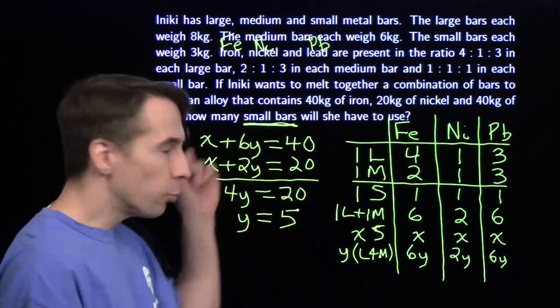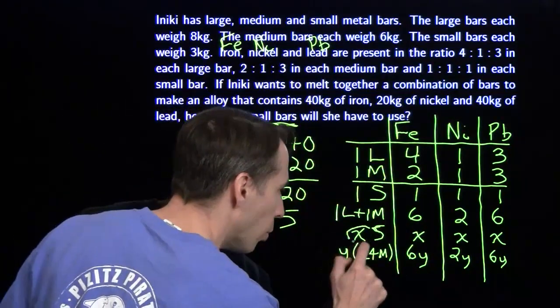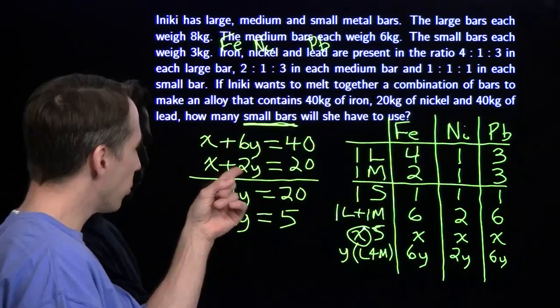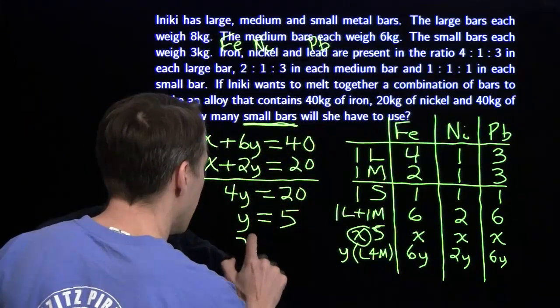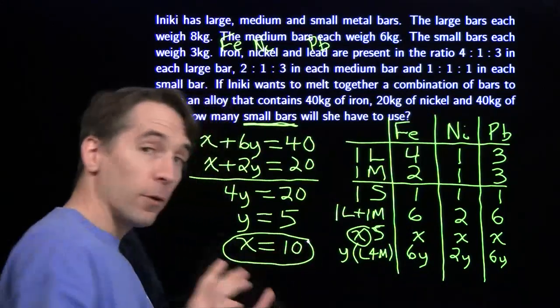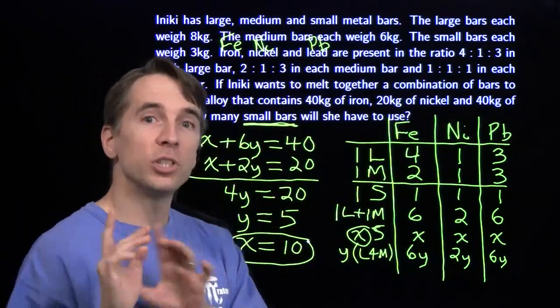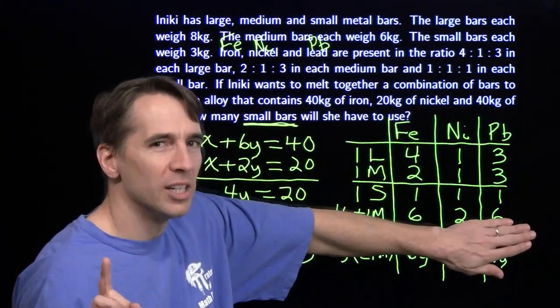Go back and read the question. We want the number of small bars. Y is not the number of small bars. X is what we're looking for. We put y equals 5 back in, and we get x + 10 equals 20, which tells us that x is 10. Now for an extra challenge, I want you to find a way to solve this problem starting from right here without ever writing down an equation.